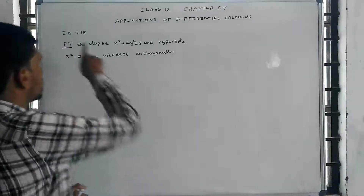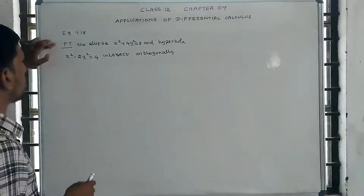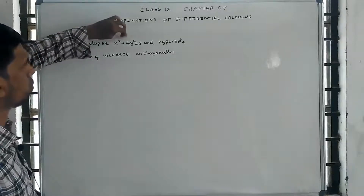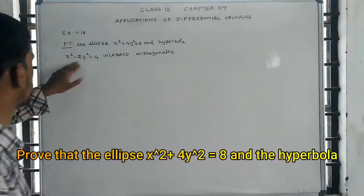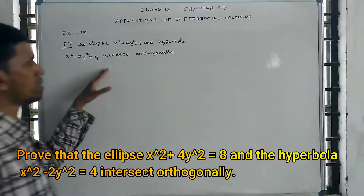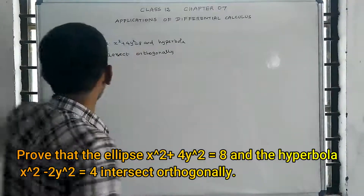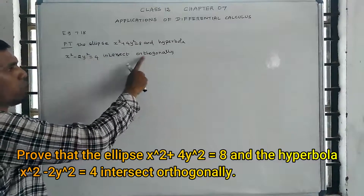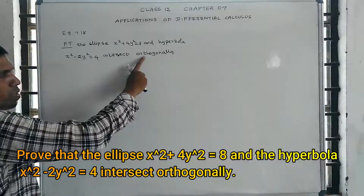Salam alaikum students. Example 7.18: Prove that the ellipse x squared plus 4y squared equal to 8 and the hyperbola x squared minus 2y squared equal to 4 intersect orthogonally. I will prove that the two curves meet at a point where the angle is 90 degrees, which is called orthogonally.